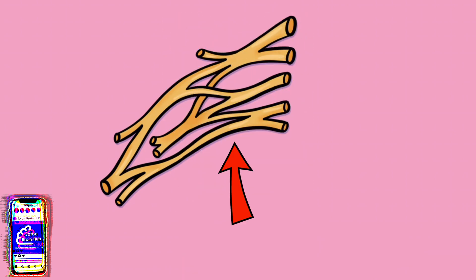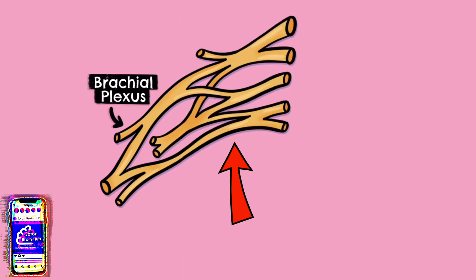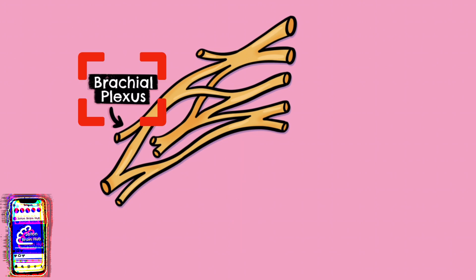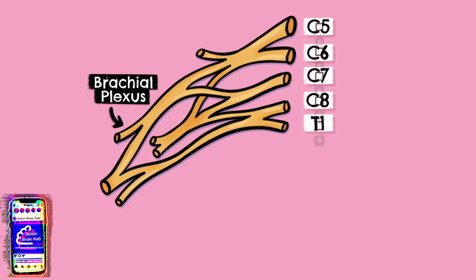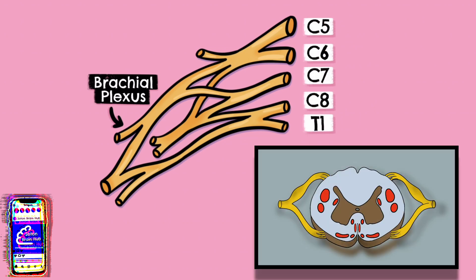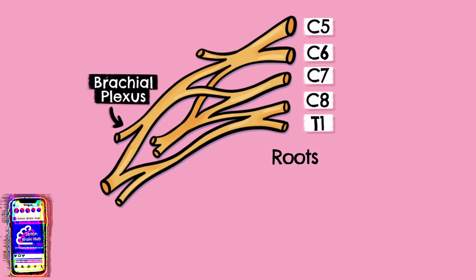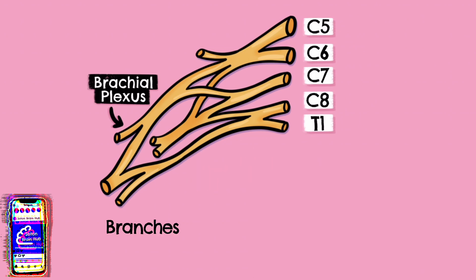A nervous plexus is a network of intercalating nerves that serve a particular area, and the brachial plexus is made from the ventral or anterior rami of spinal nerves C5 to T1. Remember the dorsal rami go backwards or dorsally and the ventral rami come anteriorly. The brachial plexus is divided into roots, trunks, divisions, cords and branches or nerves.